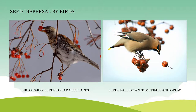Seed dispersal by birds. Birds carry fruits or seeds with their beak. While they are flying, seeds might fall down and grow into new plants. In this way, birds help in seed dispersal by carrying seeds to distant places away from the parent plant. Birds like crow, bulbul, and mayna eat fruits like neem and digest the outer fleshy part of the fruit, leaving the seeds in their droppings. Those seeds will then develop into a new plant.